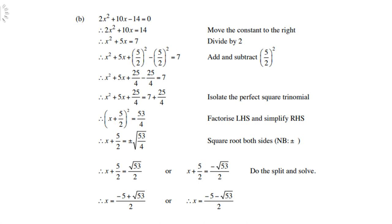So what we do is find the square root of 4 but leave 53 under the square root. Then take 5 over 2 over, and split the plus and the minus. The answers can be left like that or can be taken further using a calculator later.